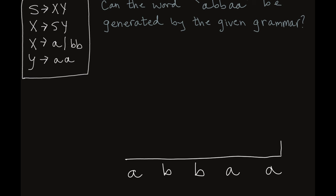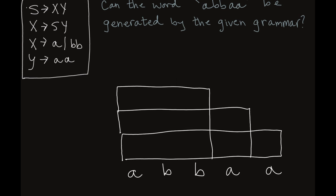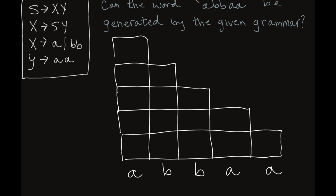I'm going to draw this diagram to help us. Row one is for all the substrings of length one. Row two is the substrings of length two. Row three is substrings of length three.